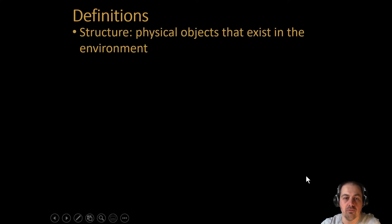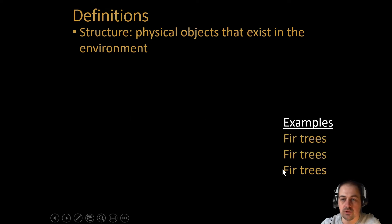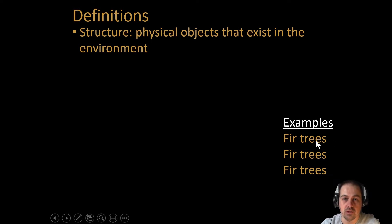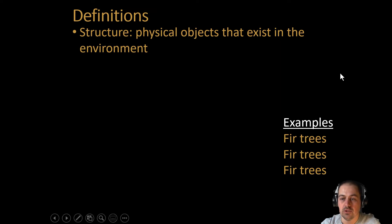Perhaps the most basic observation you can make within the environment is that of structure, which can be defined as any physical object that occurs or exists in the environment. I'm going to give you some examples. The reason I have fir trees listed three times is because even with such a simple structure, you get quite a bit of variability. It's often very useful to accompany the structure with a detailed description, and you'll be doing something similar in this week's lab.